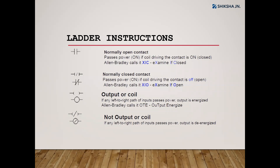In ladder programming there are instructions — you can assume them as commands. The basic commands used cover almost 80 to 85 percent of programming, and they consist of only three symbols. The first one is the normally open contact. You can see this symbol on the left-hand side. Assume it as an open switch — by default it has no connection, and when the switch is closed it allows the supply through. That is the normally open contact.